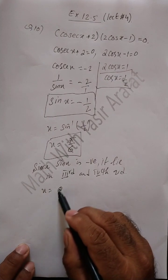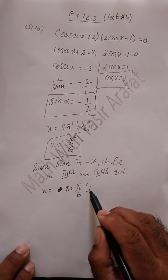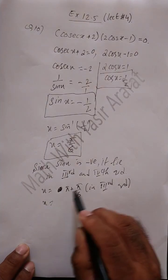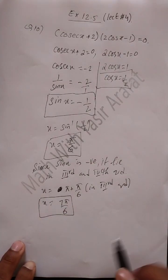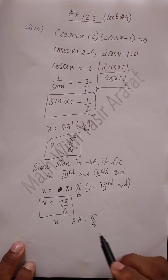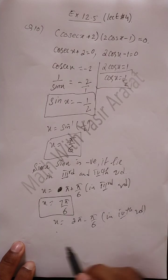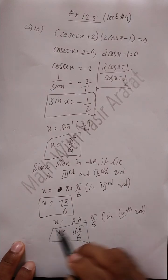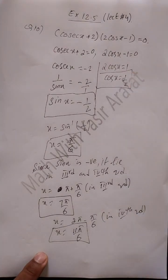Since sine is negative, the angle lies in the third and fourth quadrants. In the third quadrant: x = pi + pi/6 = 7pi/6. Similarly, in the fourth quadrant: x = 2pi minus pi/6 = 11pi/6. So we have two angles — one in the third quadrant and one in the fourth quadrant. Now let us find the values for cos x.